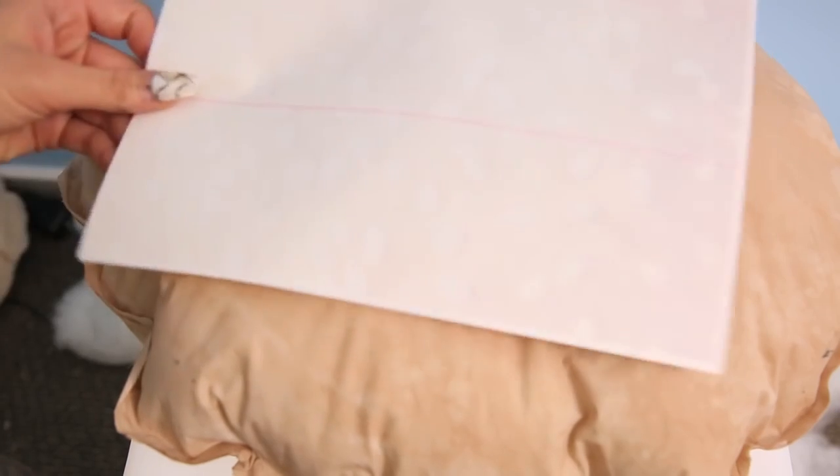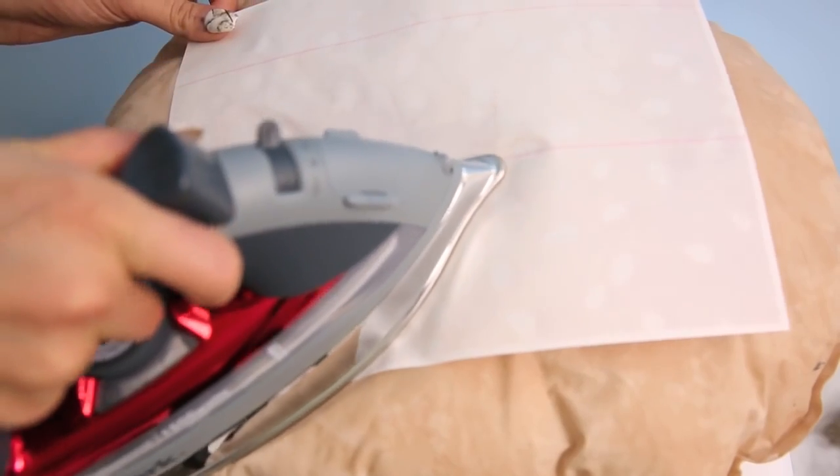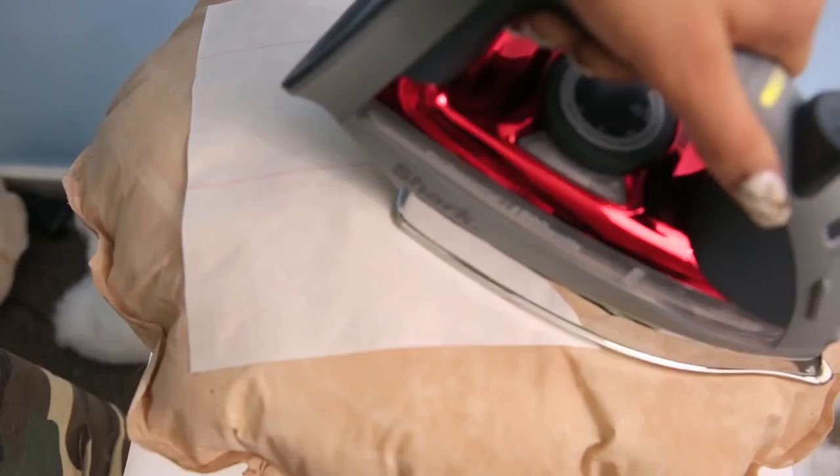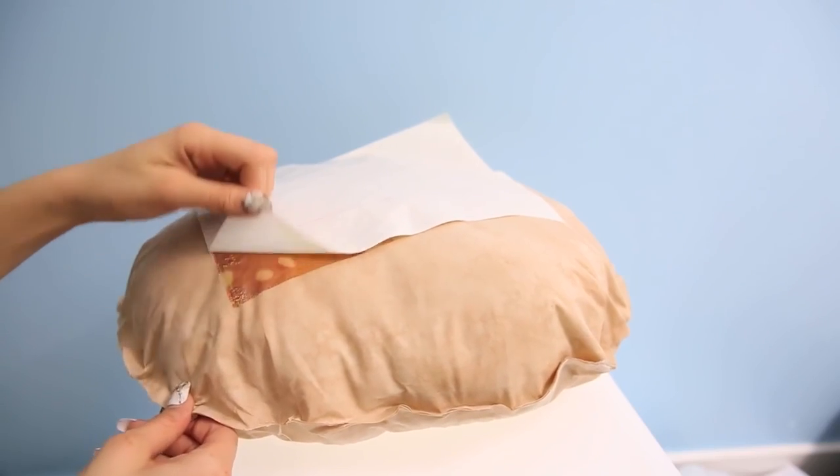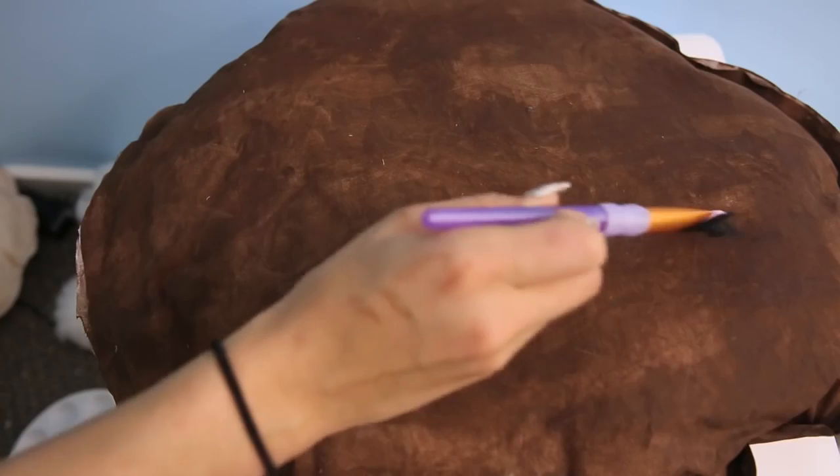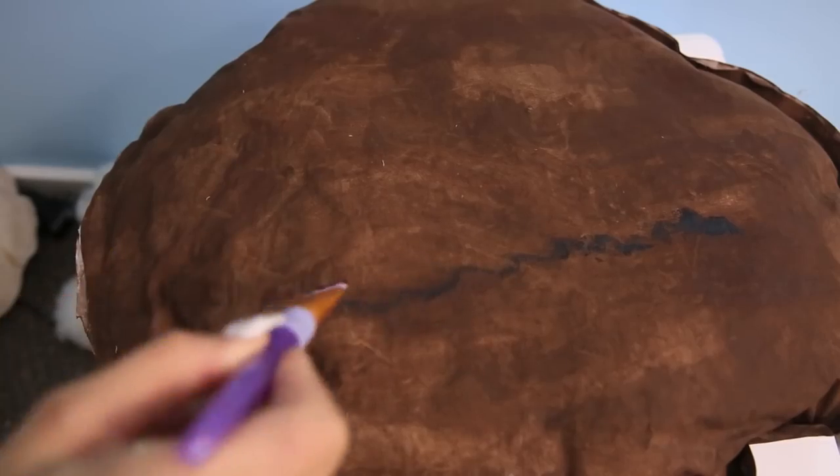Now print out a sesame seed bun onto transfer paper and iron the picture onto it. Do the same with the tomato. And for the burger, use some black paint and blend it out to make the grill marks. Then voila! You have a hamburger pillow!